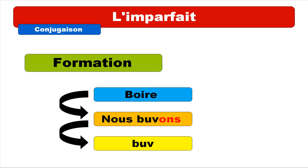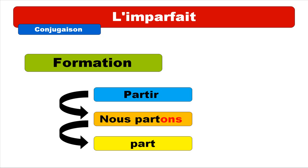Another example is boire — I chose boire because it's highly irregular, especially for nous. At the present form you get 'nous buvons'. Same thing: spot the ending '-ons', take it away, and you get 'buv' — b-u-v. Last but not least: partir — 'nous partons', ending '-ons', and you get 'part' — p-a-r-t.